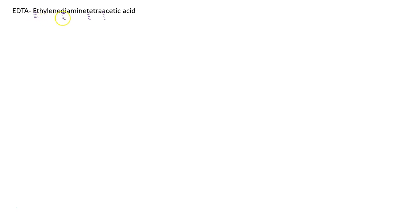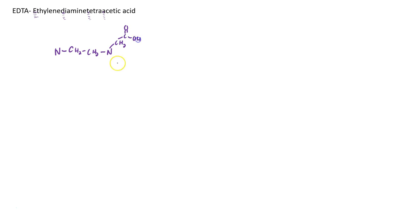I'd like to sketch the chemical structure. We are sort of familiar with this ethylene diamine portion of the molecule. Remember 'ethyl' meant two carbons, and 'diamine' meant that we have two amine groups. I'm not going to draw the hydrogens there because I have to add these acetic acid groups — there are going to be four of them: two on this nitrogen and two on this nitrogen. Here's the first, second, third, and fourth acetic acid.